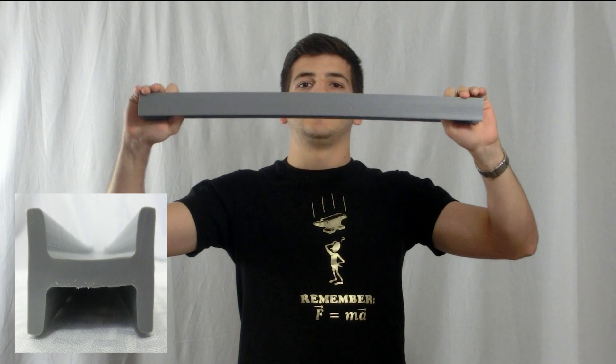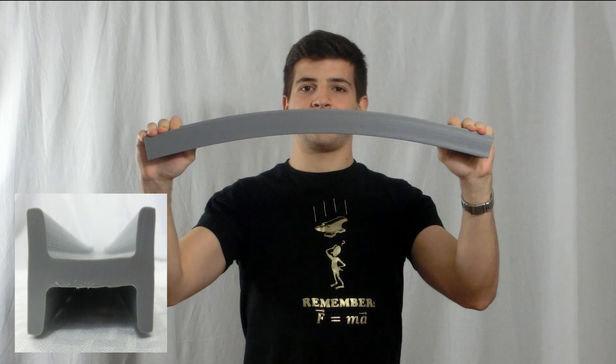For the gray I-beam, we can see that it is easier to bend in the H-orientation than it is to bend in the I-orientation.